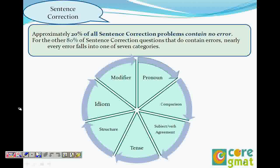Approximately 20% of all sentence correction questions have no errors, so choice A is the right answer. Assuming 13 to 16 questions, the possibility is that around three to four questions will have no error, so don't be afraid to mark choice A. For the rest of the 80%, these are the errors you can find. GMAC does not test you beyond these seven errors: modifiers, pronouns, comparisons, subject-verb agreement, tenses, structure, and idiom.